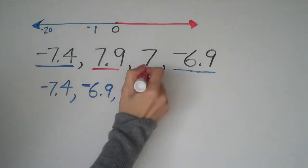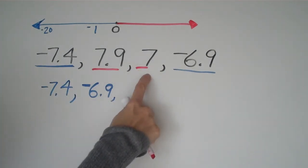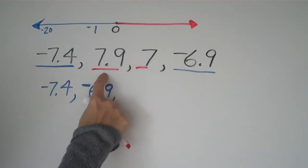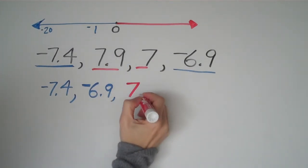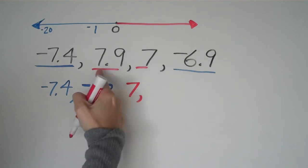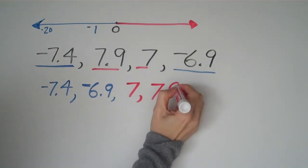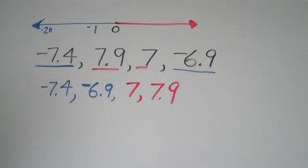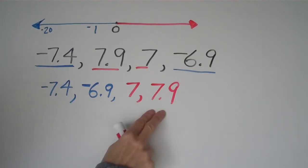Now for the positive numbers: 7.9 and 7. If you had seven dollars you'd have less than seven dollars and ninety cents, so it's straightforward — 7 comes before 7.9. And that's it, we've ordered from least to greatest.